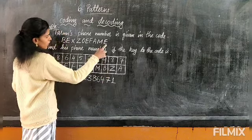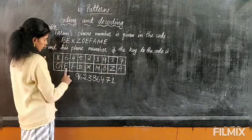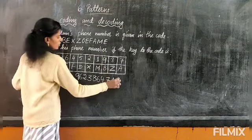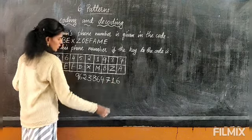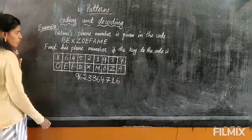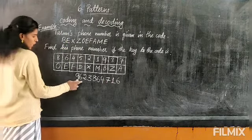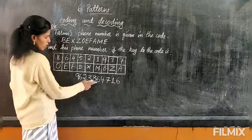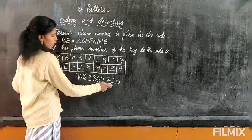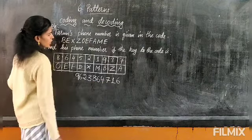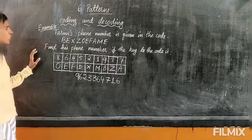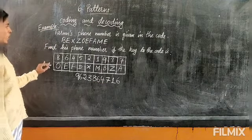Next one is E, and E stands for 6. So this is his phone number. Tawul's phone number is 9, 6, 2, 3, 8, 6, 4, 7, 1, 6. So this is coding and decoding.